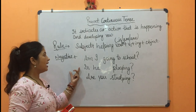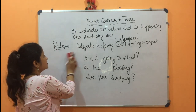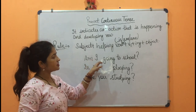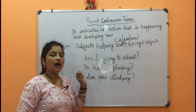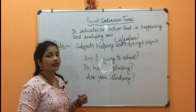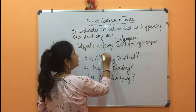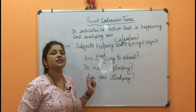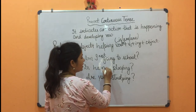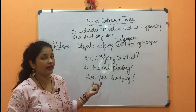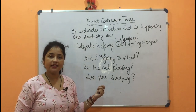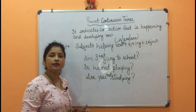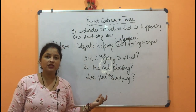Now the last type is the interrogative negative. Here the helping verb comes first, then 'not' is added. For example: Am I not going to school? — meaning am I not going to school? Is he not playing? Are you not studying? So this is the interrogative negative sentence under the present continuous tense.